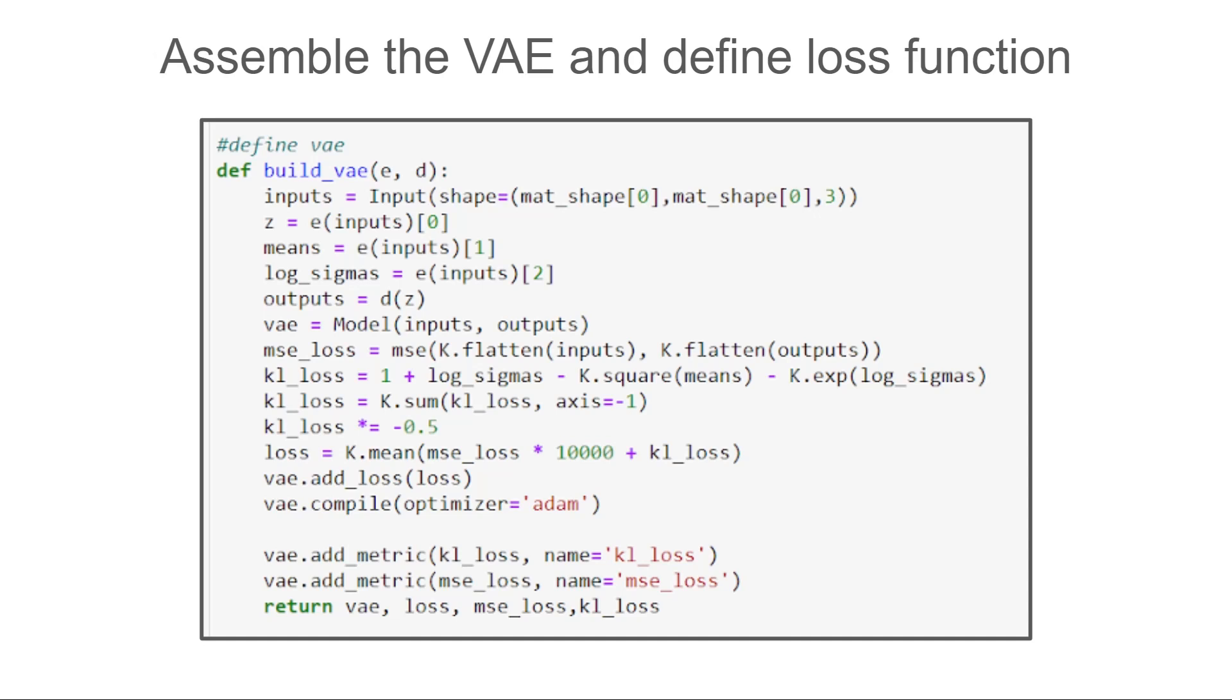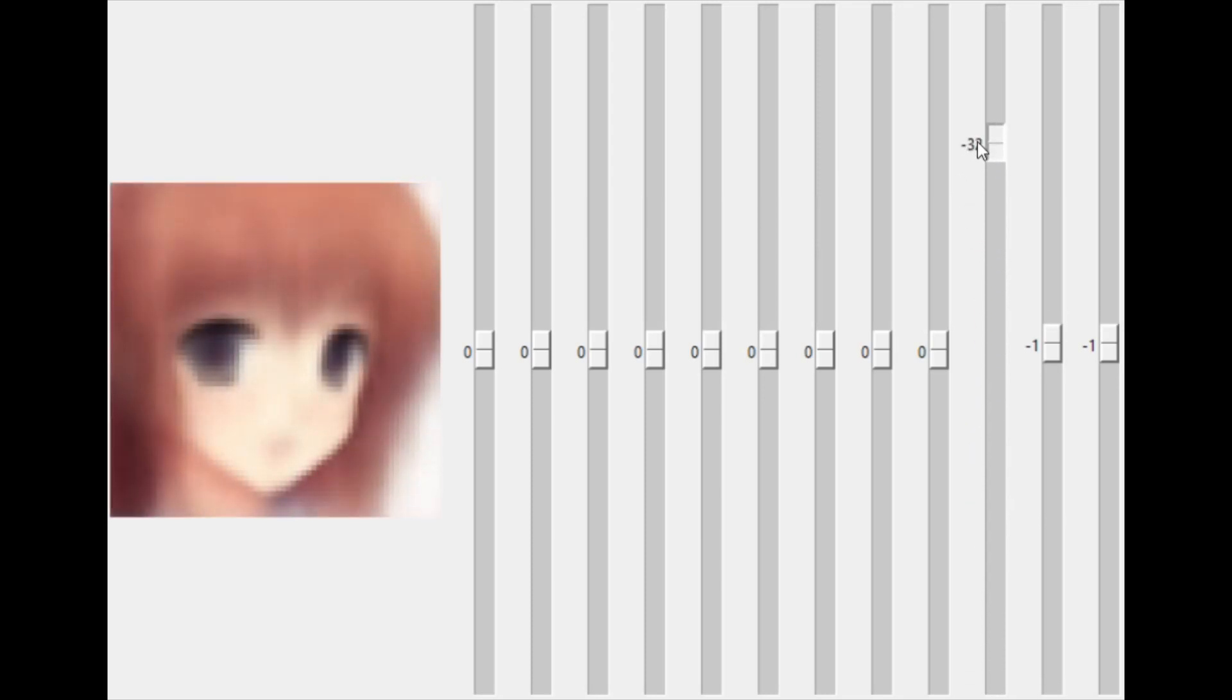Now let's see the results. I trained my variational autoencoder on anime faces from a dataset available online. I used a latent vector of size 300, which means we have 300 different characteristics to control and change how the face looks.